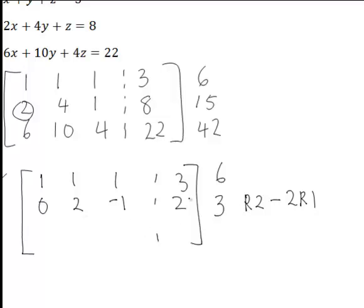Now for our next row, 6 minus 6 will be required to get 0. Therefore we are going to use row 3 minus 6 row 1. So 6 minus 6 times 1 is 0. 10 minus 6 times 1 is 4.